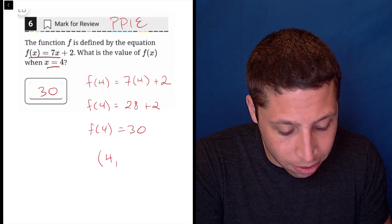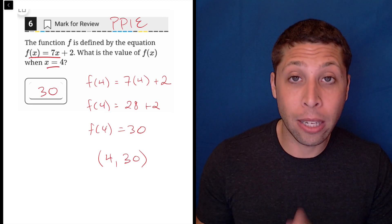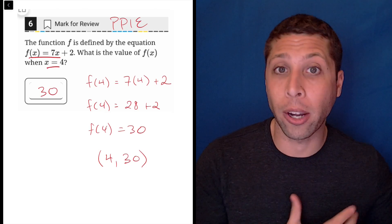This is the point where x is 4 and y is 30. So if we graph this thing on the xy plane, that's exactly where this point would lie. Function notation is really just another way of talking about xy coordinates.